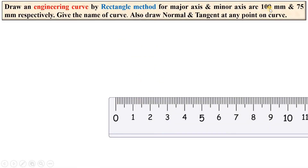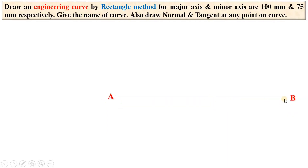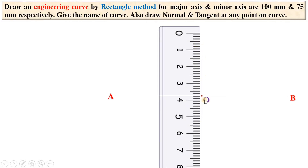First, draw the horizontal line representing the major axis, which is given as 100 mm. Draw the horizontal line of 100 mm and give it the name AB. Now mark the midpoint of line AB and name it O. Draw a vertical line passing through point O, exactly equal to the minor axis of 75 mm. Keep in mind that AB bisects this vertical line, so each half should be 75 mm divided by 2.